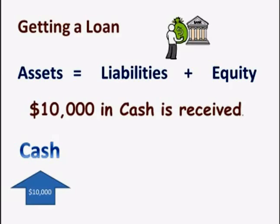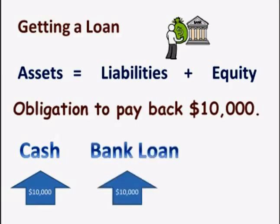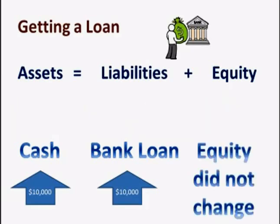At the same time, the business has an obligation to pay back the bank $10,000. Liabilities increase by $10,000 because an obligation to pay is a liability. Equity is not affected in this transaction. The right-hand side of the equation goes up by $10,000, and the accounting equation balances.